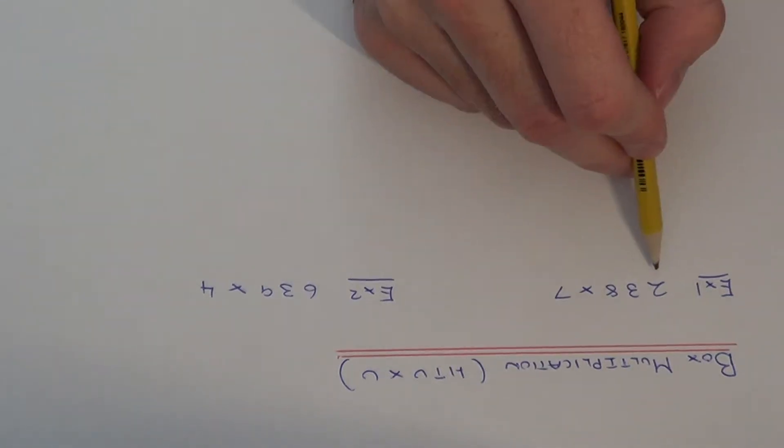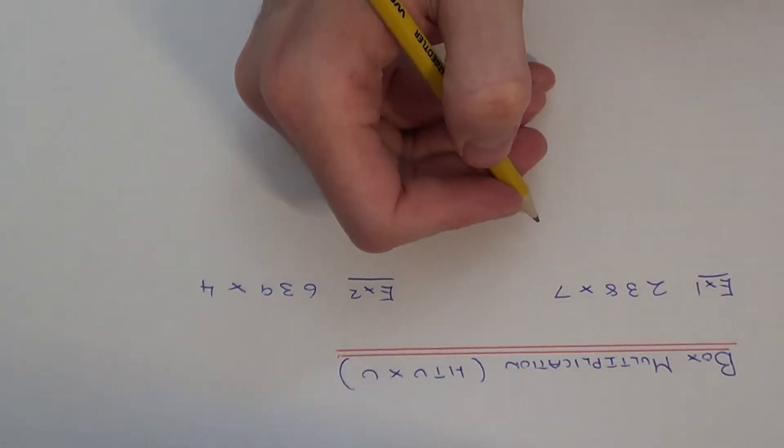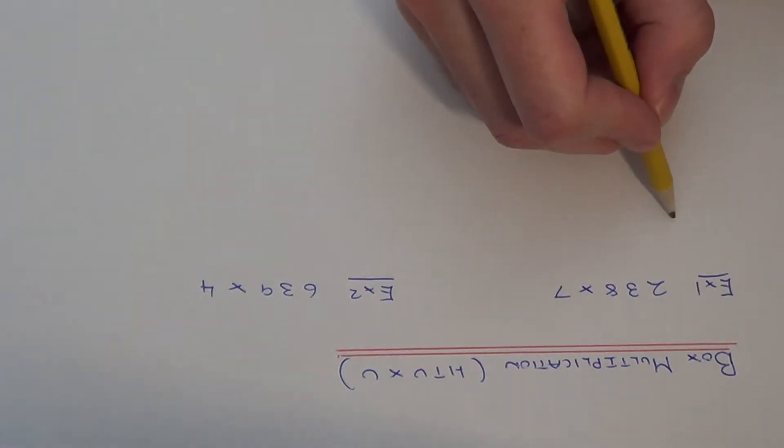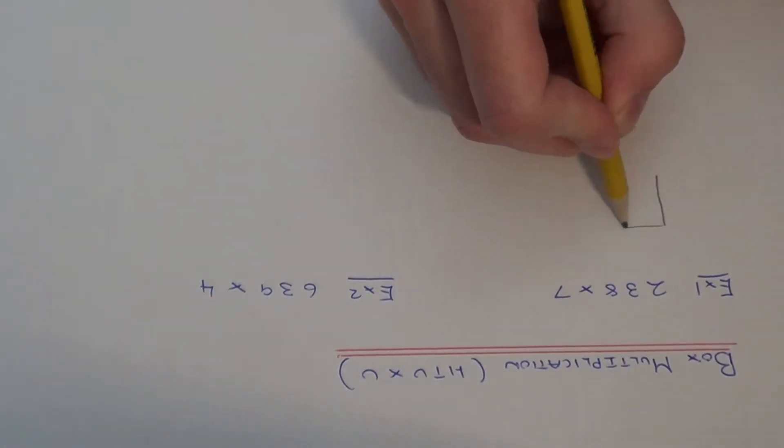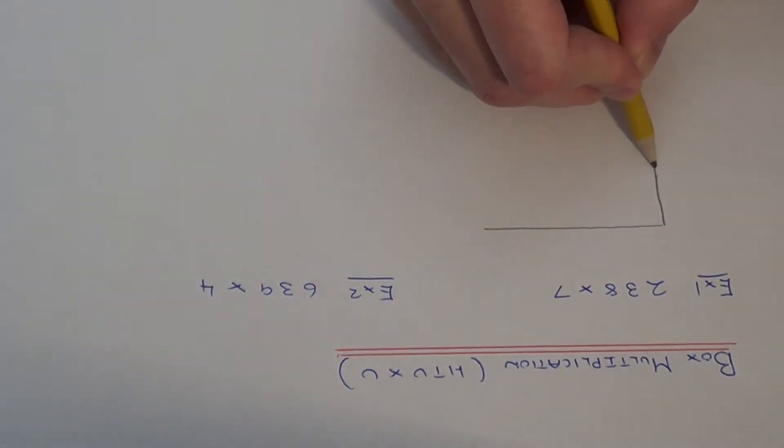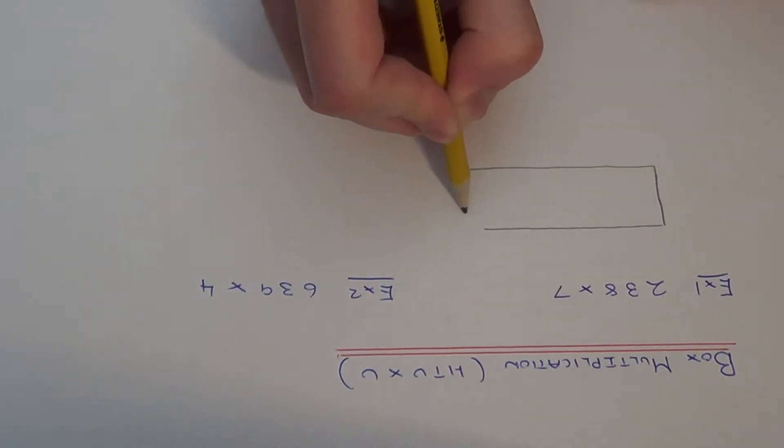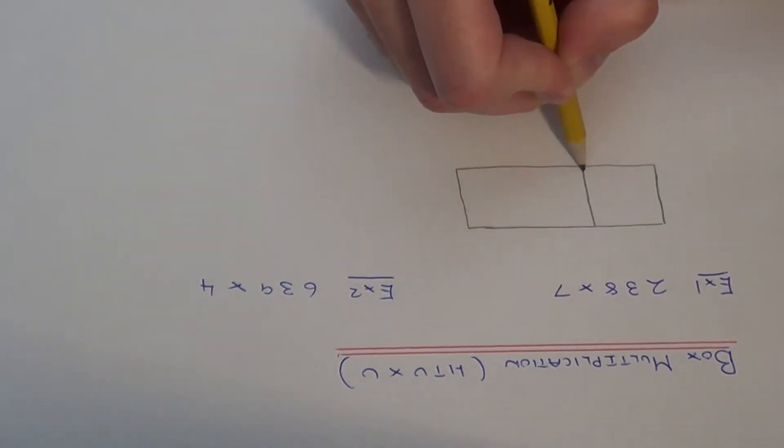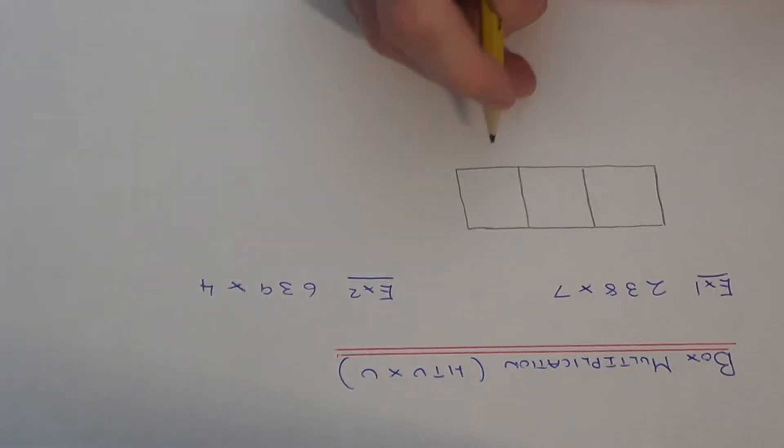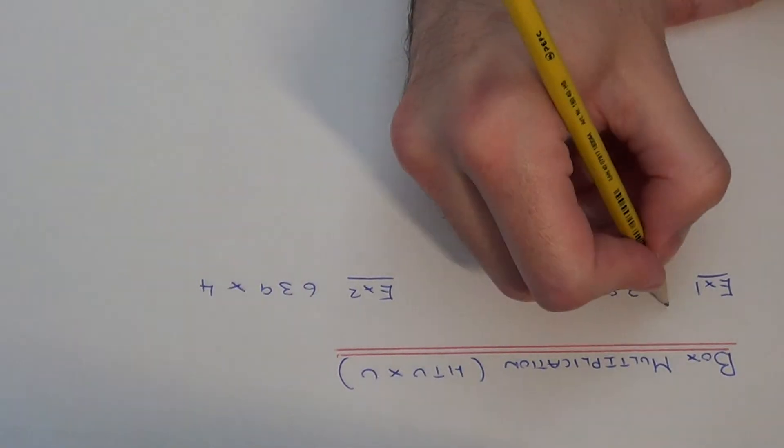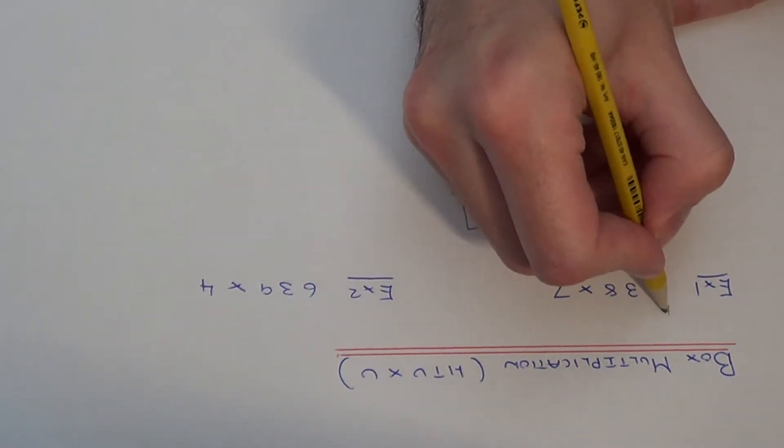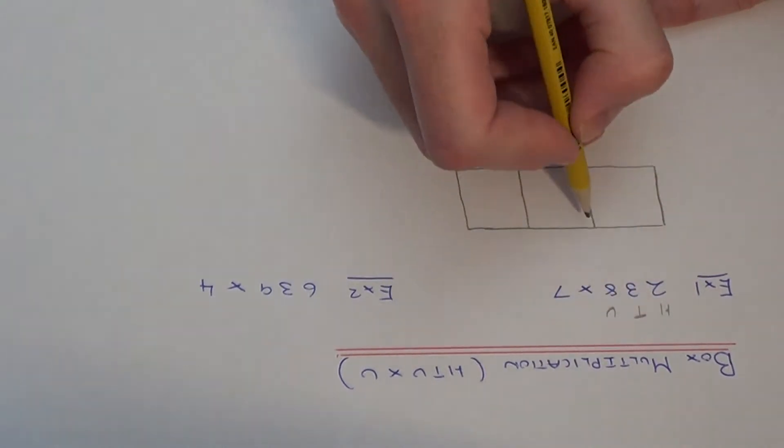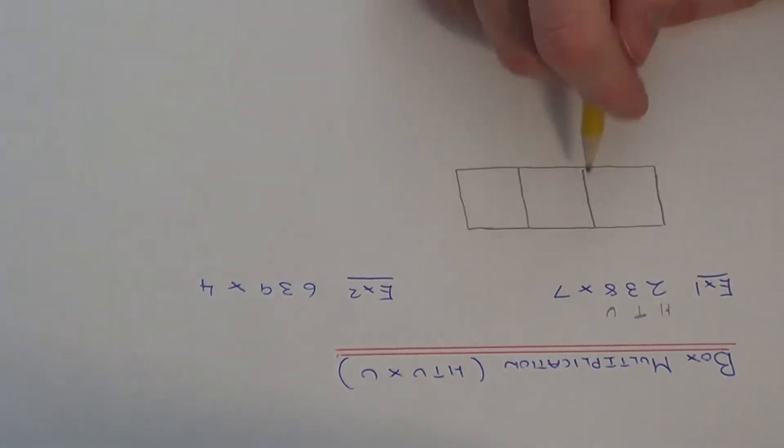So in our first example we've got 238 times 7. If we draw a rectangle out and divide the rectangle up into three boxes because we have a three digit number, we need to break up 238 into hundreds, tens and units and write this above the top of each box.